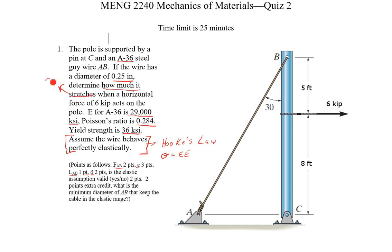At last we need to verify our assumption that the elastic assumption is true or not. We get two points for that. And then if we still have some time, we can see what the minimum diameter of AB is to keep the cable in the elastic range. It depends on what we find for our conclusion on whether that assumption is correct or not.